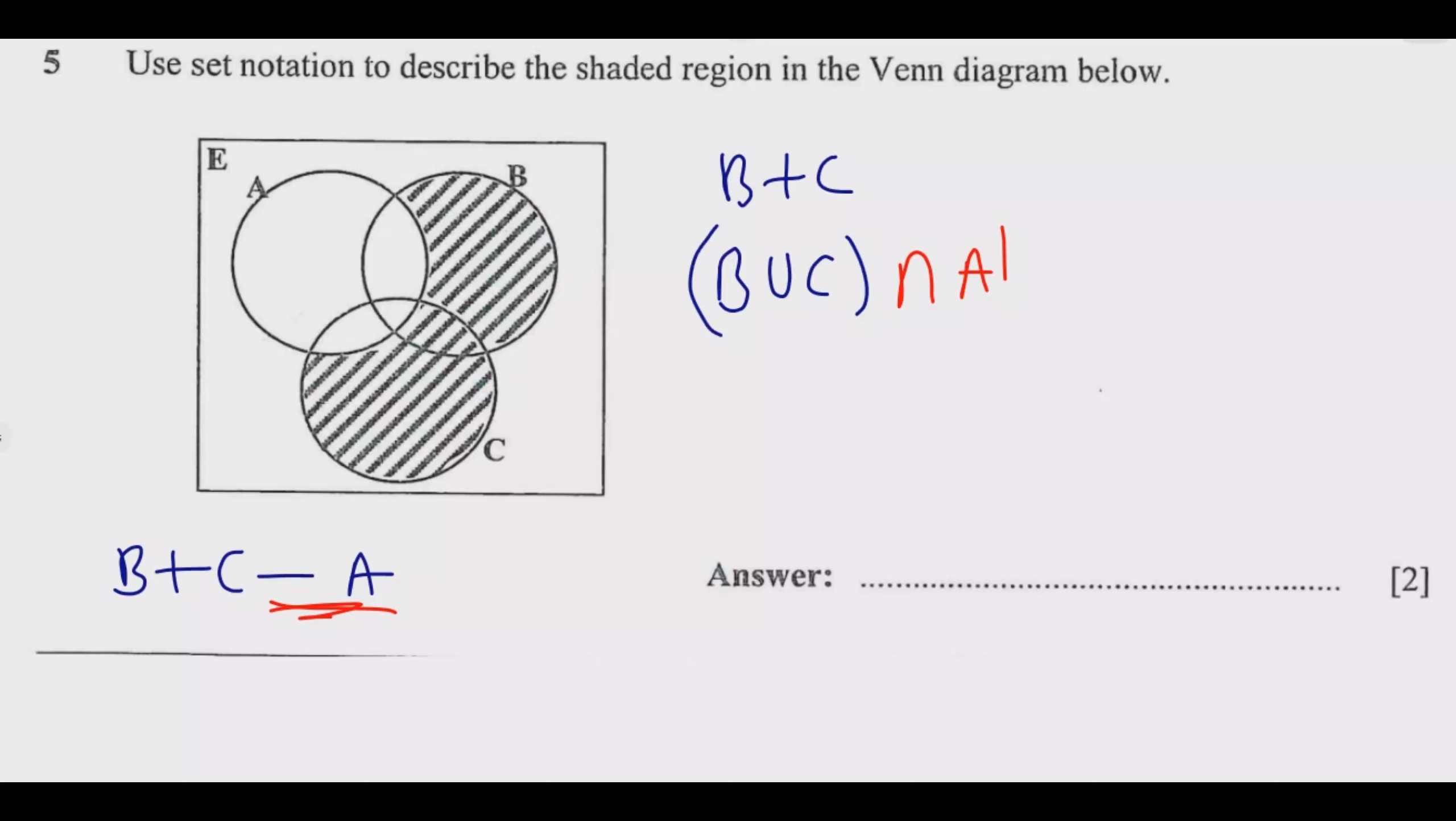So whatever is in B and C, combine them but we take out what is found in A, so we only want what is not found in A. Therefore, the answer is B union C intersection A complement.